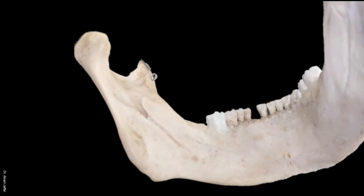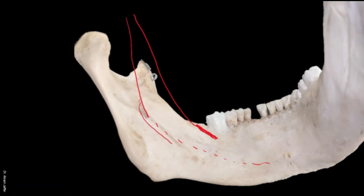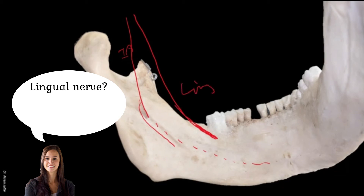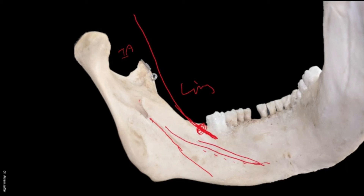Which nerve is closely related to the bone at this location? The nerve to mylohyoid comes from the inferior alveolar nerve and runs below the mylohyoid. The lingual nerve is close to the bone behind the third molar tooth. This groove here is for the nerve to mylohyoid, which supplies the mylohyoid and the anterior belly of digastric.